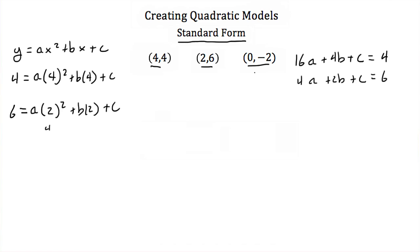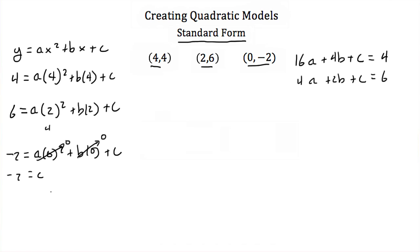Then if I plug in my last point, which is x equal to 0 and y equal to negative 2, I end up with a times 0 squared plus b times 0 plus c. 0 squared is 0 times a is still 0, and 0 times b will be 0. So we end up with c is equal to negative 2. Here I have three equations and three unknowns: a, b, and c.